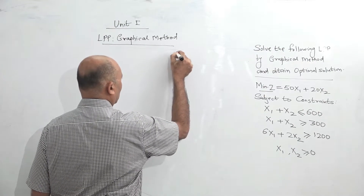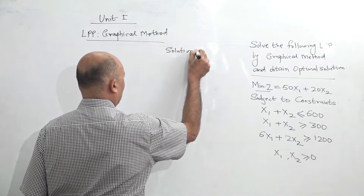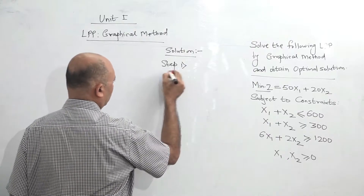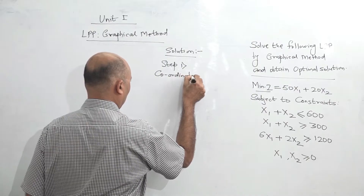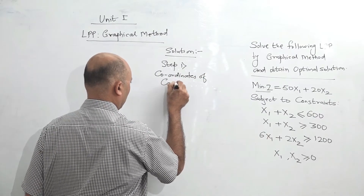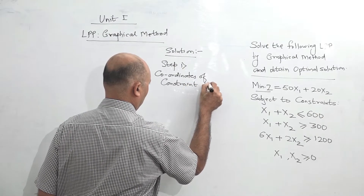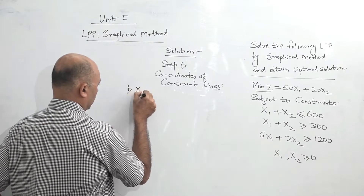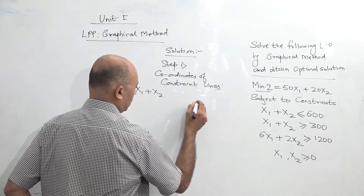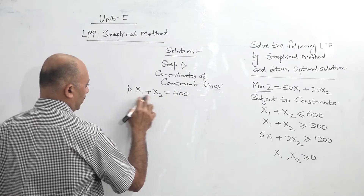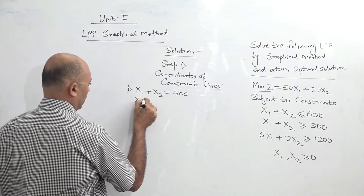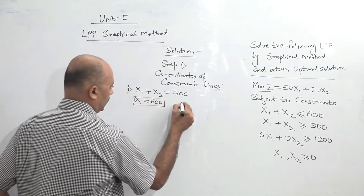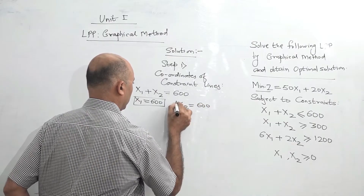Step one, as we have seen in the earlier problem, step one is always finding the coordinates of constraint lines. First constraint: x1 plus x2, converting to equality, equals 600. To find x1, assume x2 as 0, so x1 will be 600. Same way, to find x2, assume x1 as 0, so x2 will be 600. So coordinates are 600 and 600.